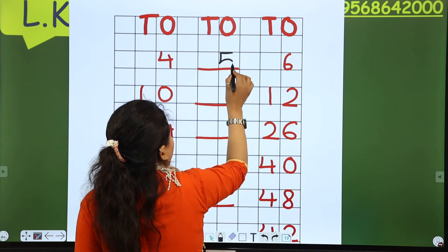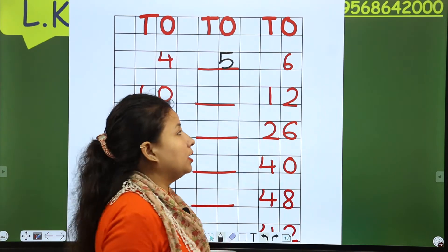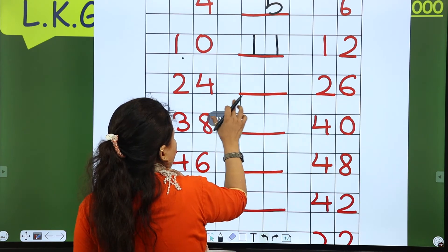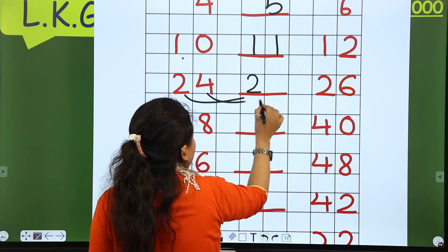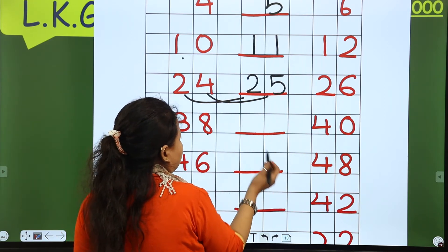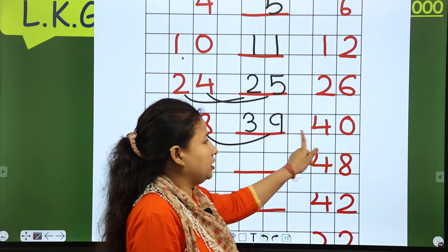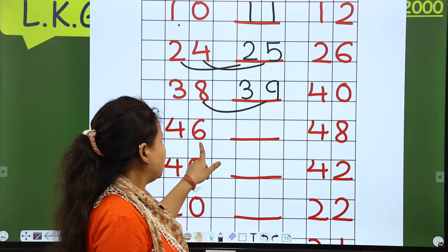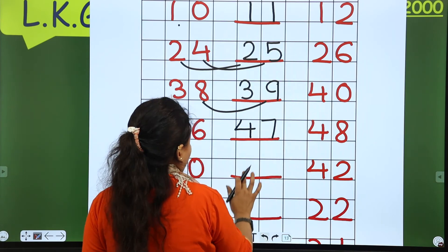Next: 10 dash 12, so the number in between is 11 — ten, eleven, twelve. Then 24 dash 26, the next number is 25 — twenty-four, twenty-five, twenty-six. Then 38 dash 40, the next number is 39 — thirty-eight, thirty-nine, forty. And 46 dash 48, the number in between is 47 — forty-six, forty-seven, forty-eight.